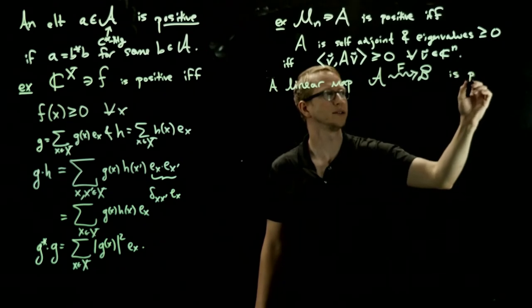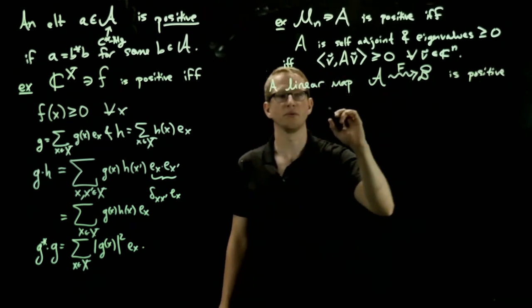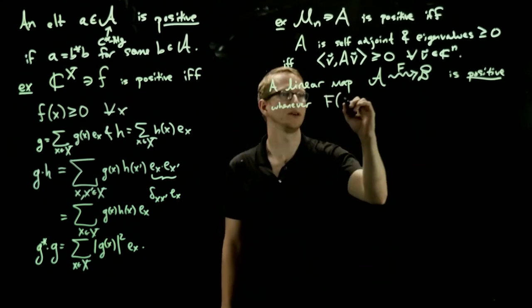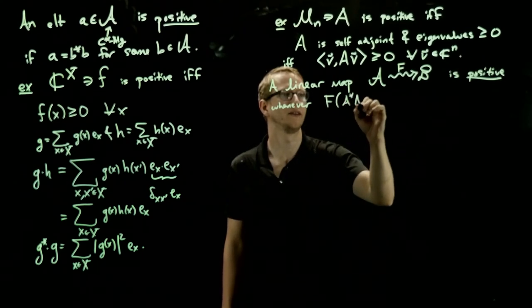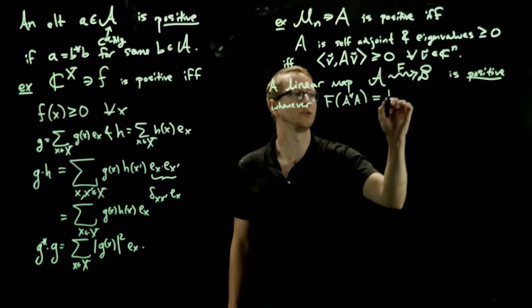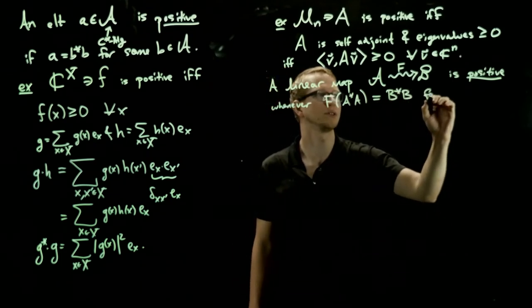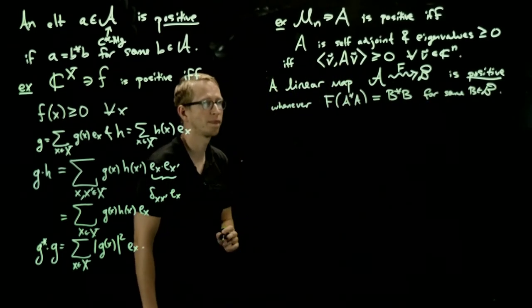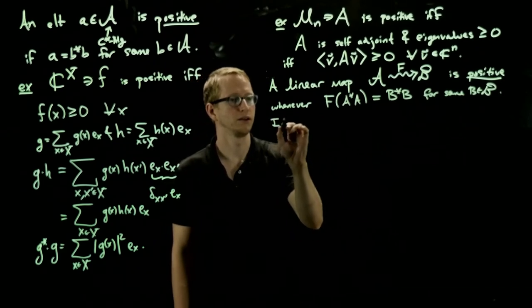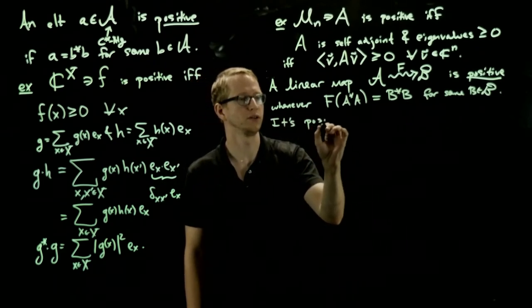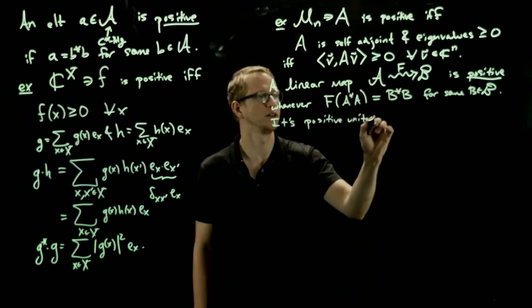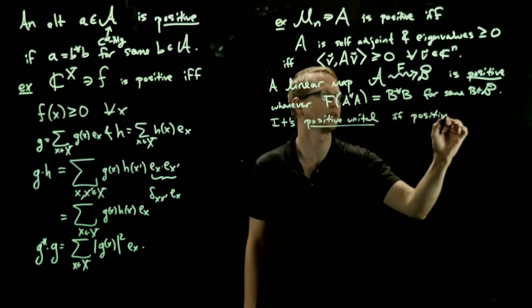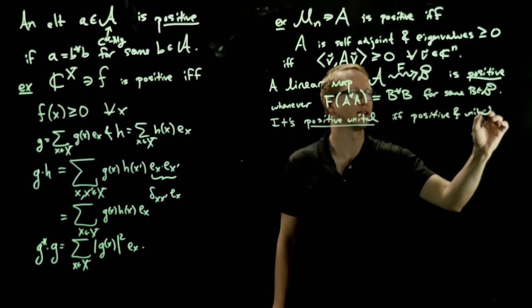is positive whenever F of a positive, let's use now A star A, a positive element is equal to another positive element for some B and B. And it's positive unital if and only if it's both positive and unital, which means that it sends the identity element to the identity element.